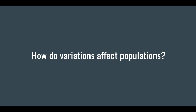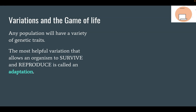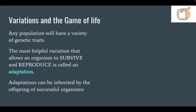But how do these variations affect populations? We have to remember that genes can be passed from parents to offspring. Any population will have a variety of traits, and the most helpful variation is called an adaptation. An adaptation is the variation that is the most successful — the most likely to lead an organism to survive and reproduce. Because variations are genetic, adaptations can be inherited by the offspring of successful organisms. Successful parents pass on their traits to their offspring, and those offspring are likely to have those successful traits.